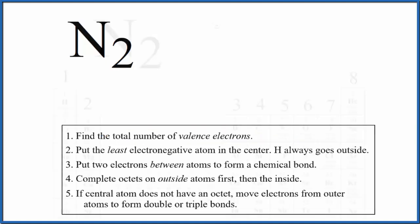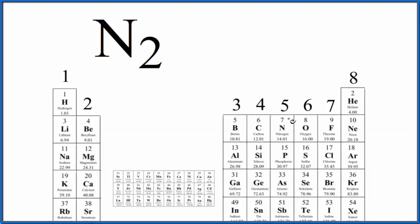Let's use the periodic table to do that. So we find nitrogen right here, group 15, sometimes called 5A. Nitrogen has five valence electrons. So we have five, we have two nitrogen atoms, five times two. That gives us a total of ten valence electrons for the N2 Lewis structure.